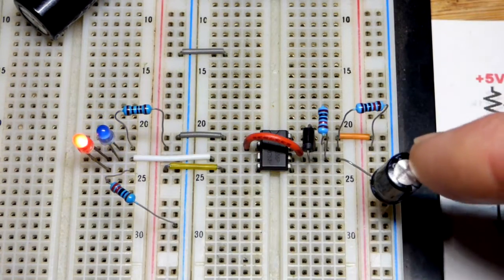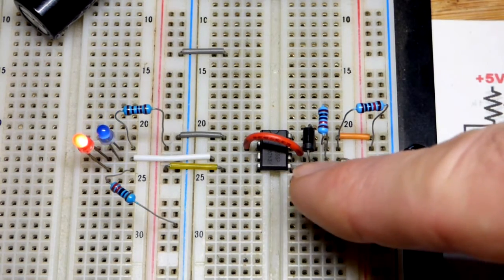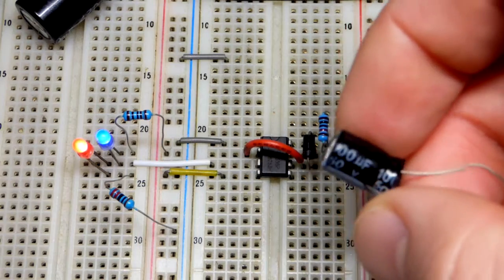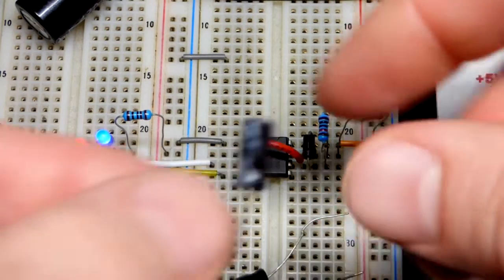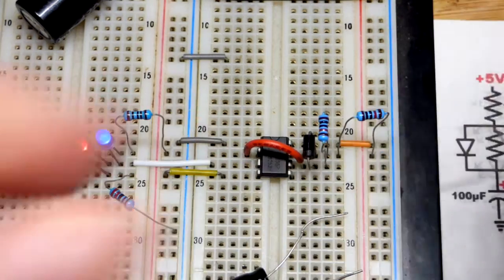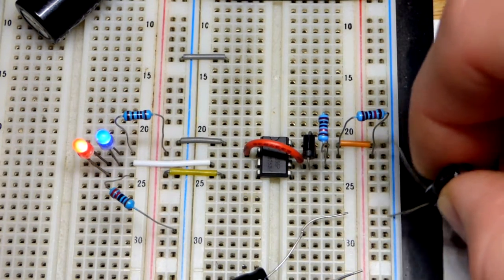This is a 100 microfarad capacitor. We're going to swap it out with a 22 microfarad capacitor, which is close to a fourth of the capacitance, so we should get about four times faster flashing at the output.